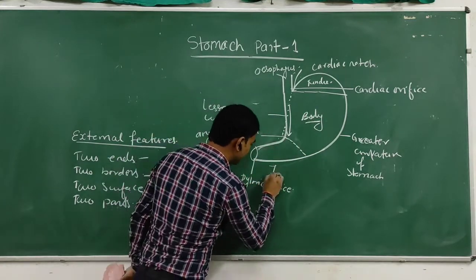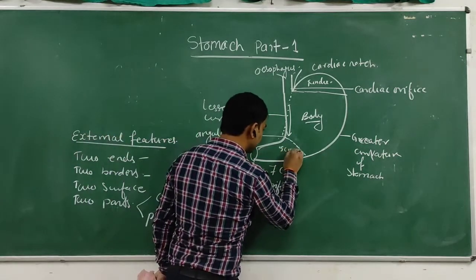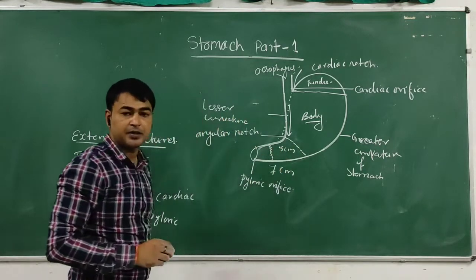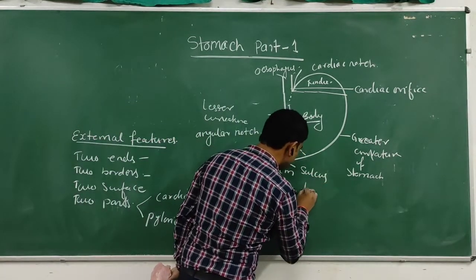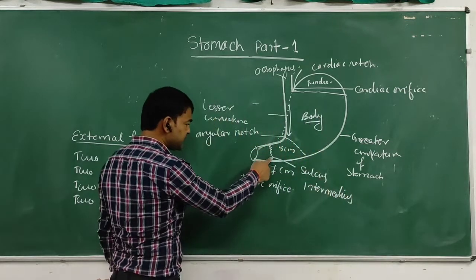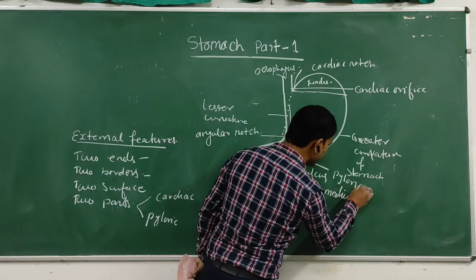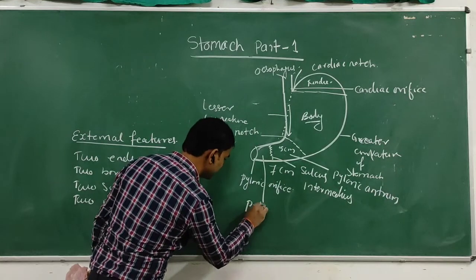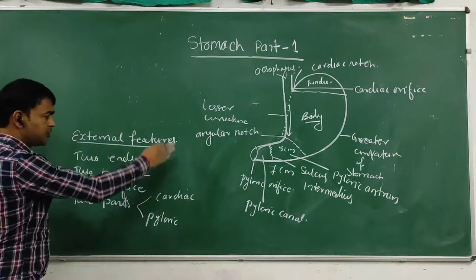The pyloric part is about 7 cm in length. About 5 cm from the body, there is an inconstant muscular ridge known as the sulcus intermedius, which divides the pyloric part into two portions: the pyloric antrum and the pyloric canal.